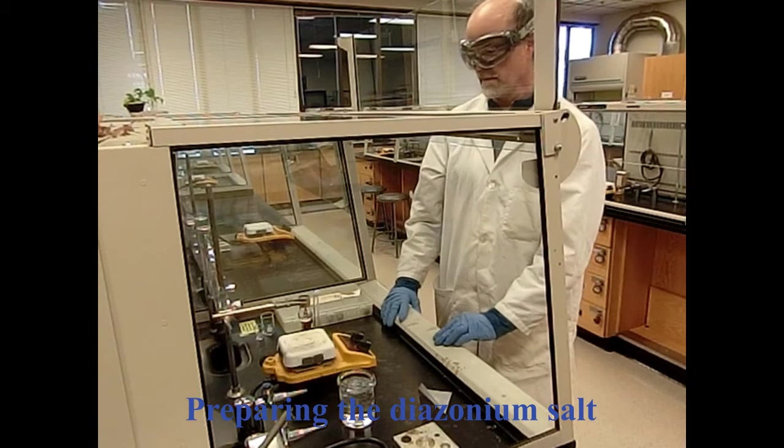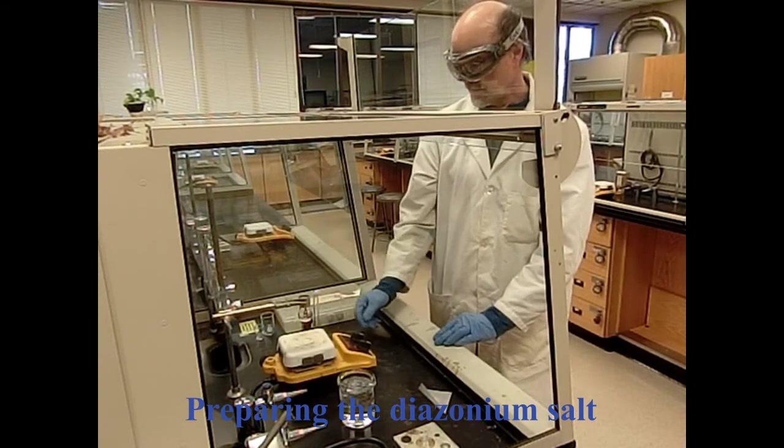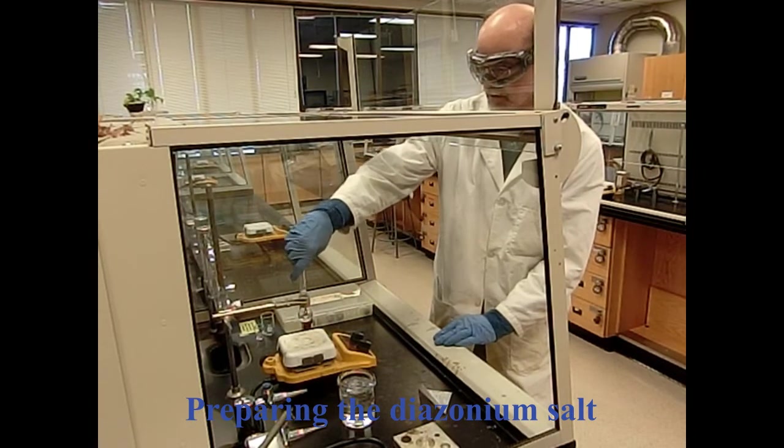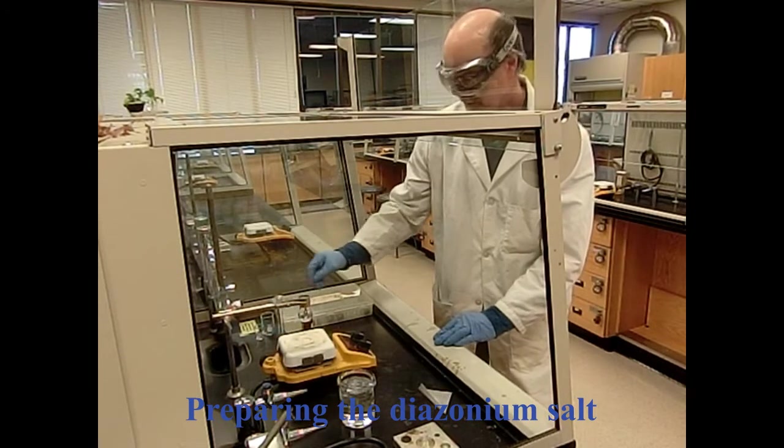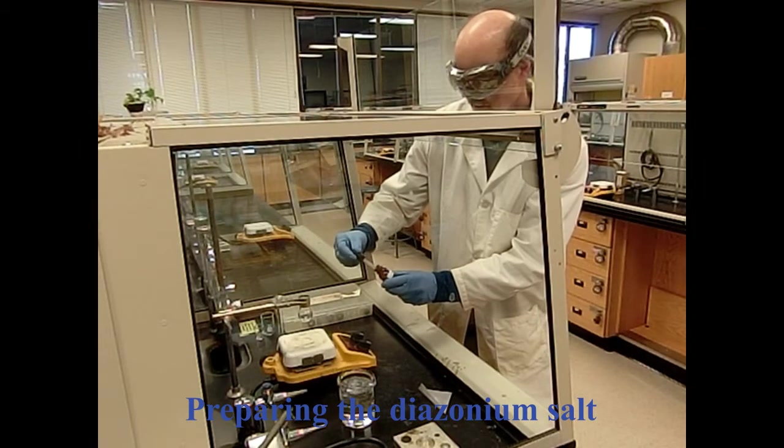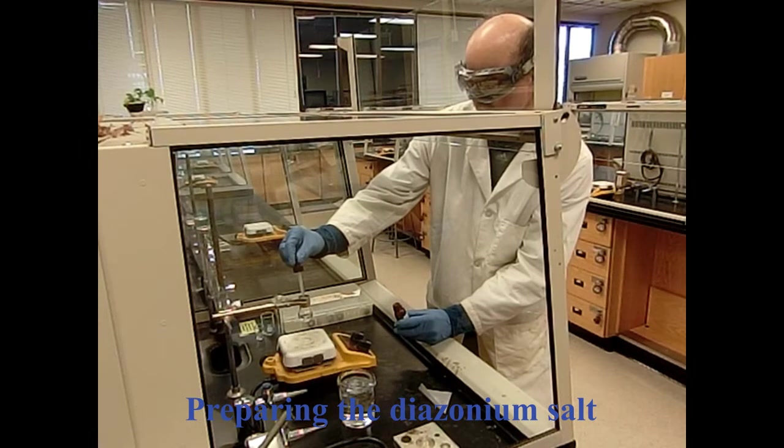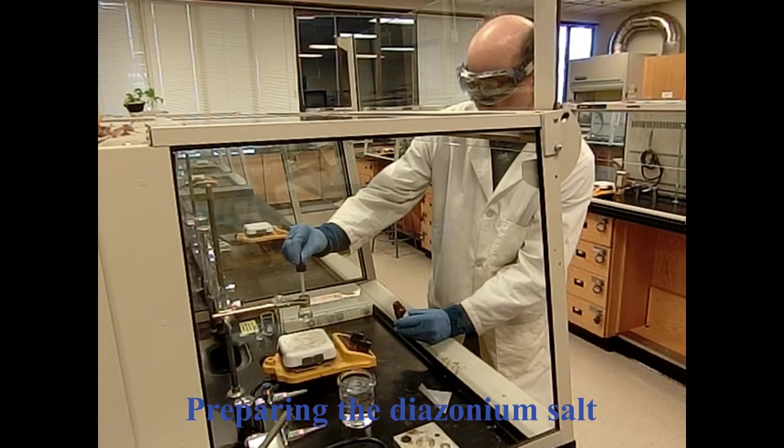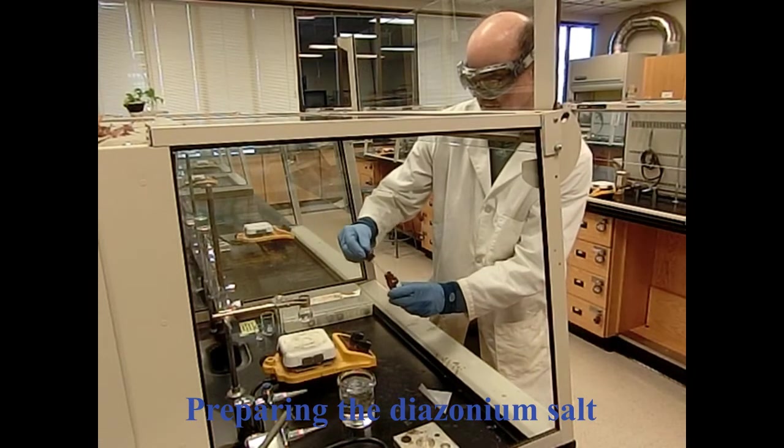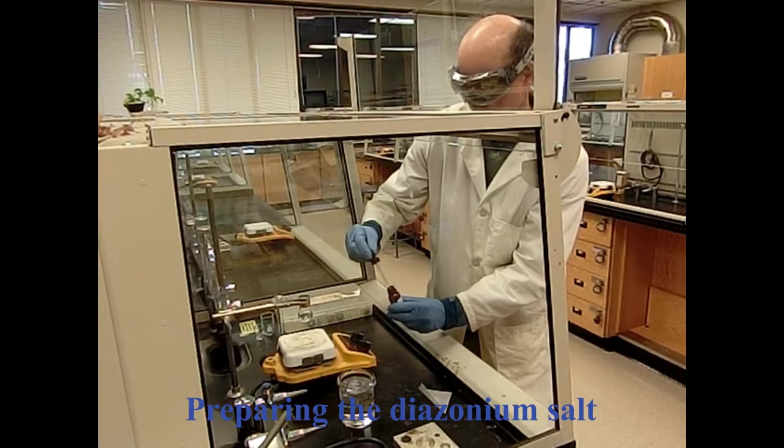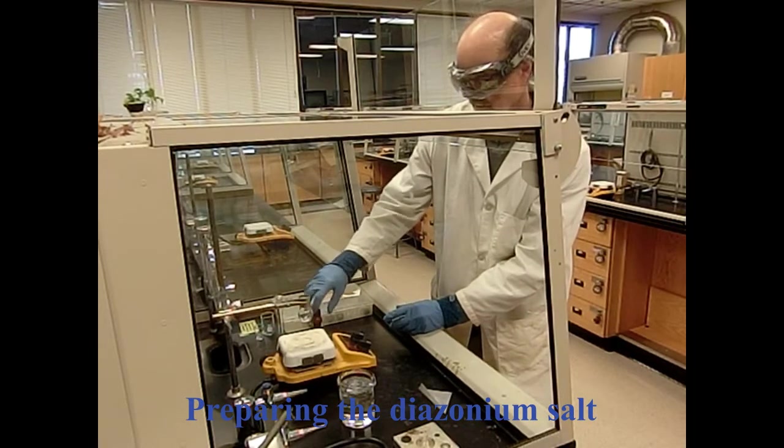Here we are with step one. We're in a 10-ml round bottom flask with a stir bar. We're going to add 2 mls of water. We're now going to prepare our diazonium salt. I've got water and I have about 20 drops of sulfuric acid. This is not essential, it doesn't have to be exact stoichiometry. It's more of a catalyst in this reaction.